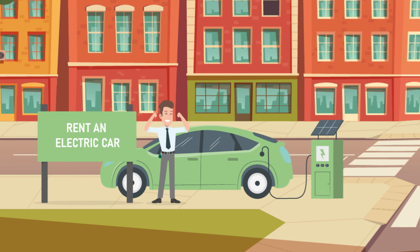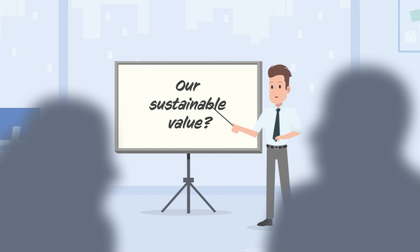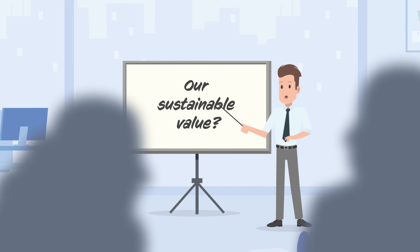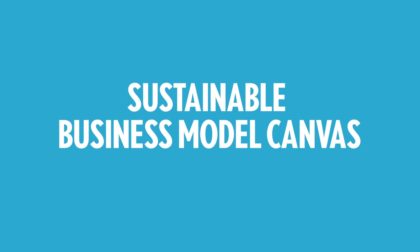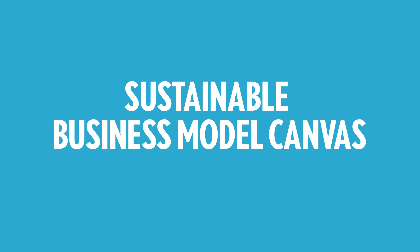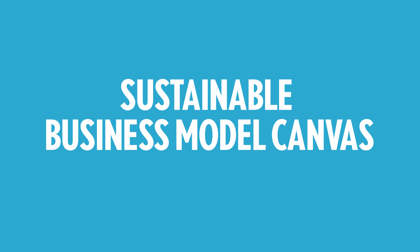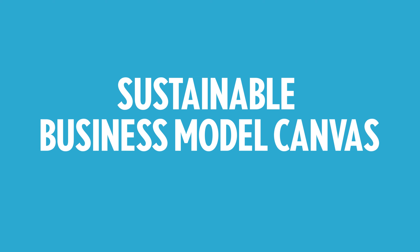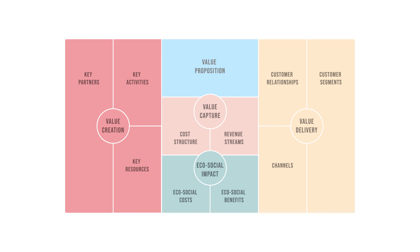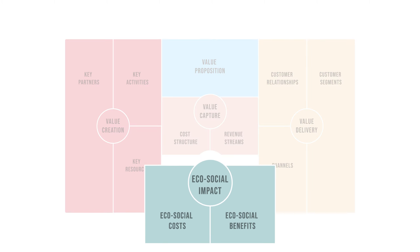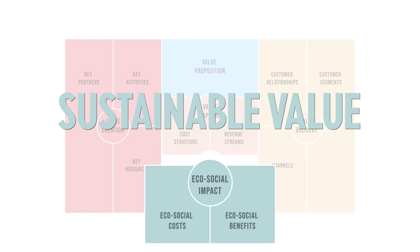These days, a lot of companies value sustainability. I will show you a tool that can help you understand the sustainable value of a company's business proposition. It's called the Sustainable Business Model Canvas. The tool describes how a company is organized and how it creates value in a sustainable way while it delivers products or services to customers. The canvas consists of 11 building blocks, adding those of eco-social costs and benefits to a regular business model canvas. This way, companies can map their sustainable value and improve on it.